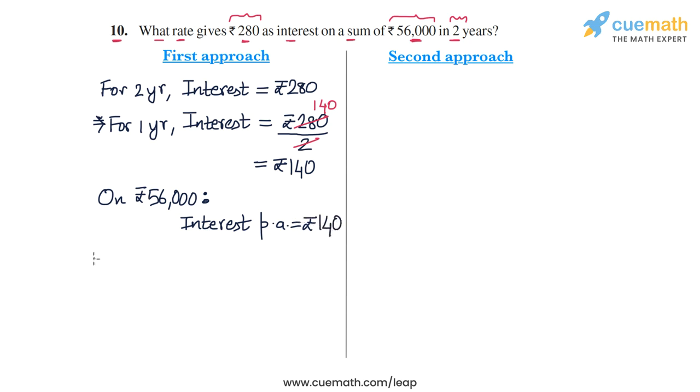And this means, now we apply the unitary method. On ₹100, what will be the interest amount in one year? On ₹100, the interest in one year or per annum will be: you simply divide 140 by 56,000 and multiply that by 100. So we have ₹140 divided by ₹56,000 into ₹100. This is how we can calculate the interest in one year.